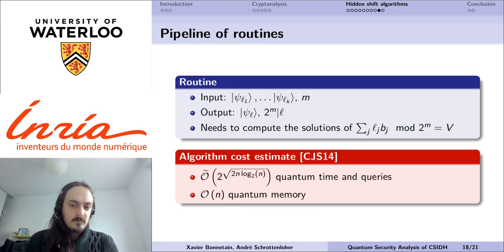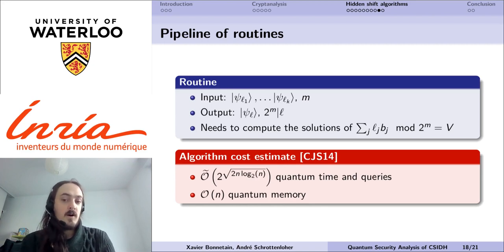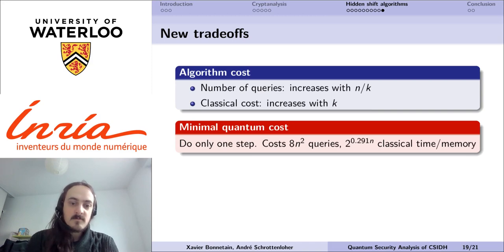In fact, if we look a bit more closely to the equation of the phase in the superposition, we can remark that this corresponds to a subset sum instance, which means that we can use classical algorithms for subset sum in order to find the solutions.